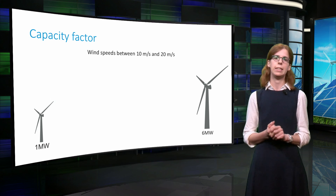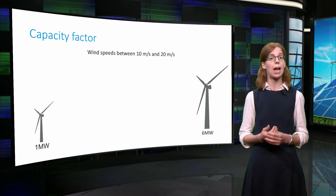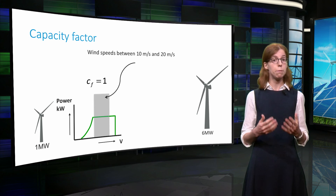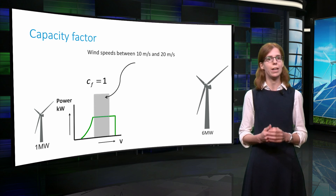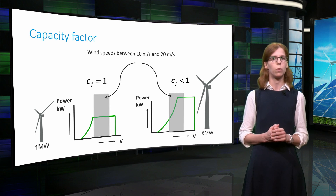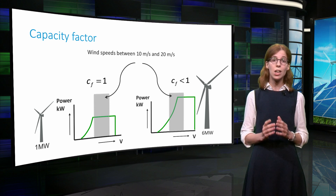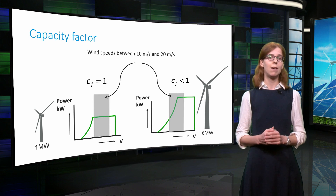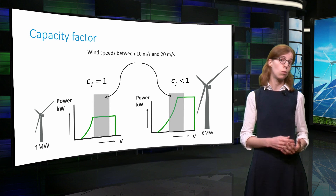This is illustrated by this slide. Imagine that the wind speed varies between 10 m/s and 20 m/s at a given location. Placing a 1 MW turbine at this location might mean that it will run all the time at rated power, thus producing 1 MW all year long. By contrast, a 6 MW turbine might not be running at rated power all the time, so its capacity factor will be lower. However, when it does run at full power, it will produce 6 MW. So despite its lower capacity factor, the overall power produced by the 6 MW turbine might well be larger than that of the 1 MW turbine.